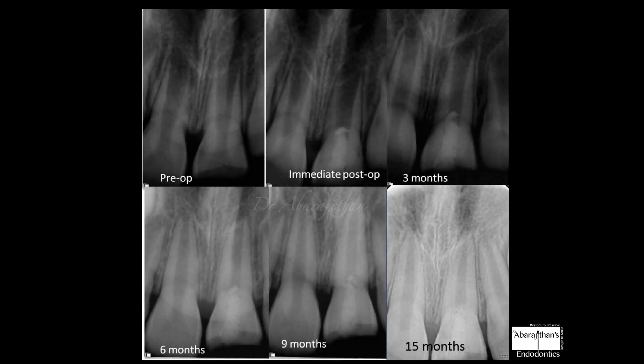One such indication was this case I did in the past. You can see a young boy who reported at a very young age — almost seven years. You can see the blunderbuss canals and the root apex is not closed. The patient reported immediately after trauma so we did a pulpotomy. The radicular pulp vitality was preserved and on periodic follow-up, apexogenesis was taking place. At the 15-month follow-up you can see complete root formation.